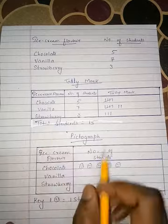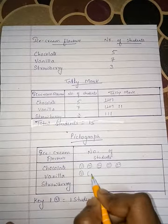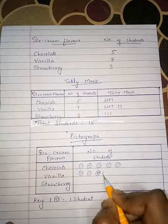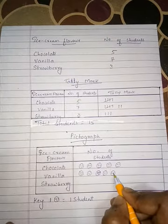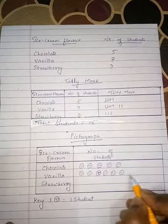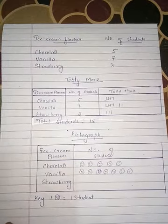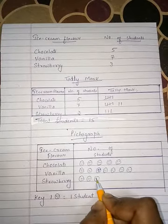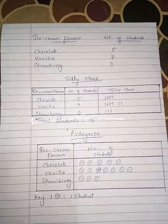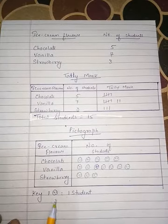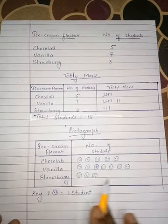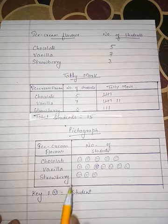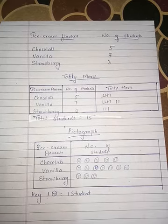Vanilla has 7, so we draw 7 smileys: 1, 2, 3, 4, 5, 6, 7. Strawberry has only 3, so we draw 3 smileys: 1, 2, 3. Remember, whenever you make a pictograph, always write the key — for example, 1 smiley equals 1 student. Always write the key when making a pictograph.